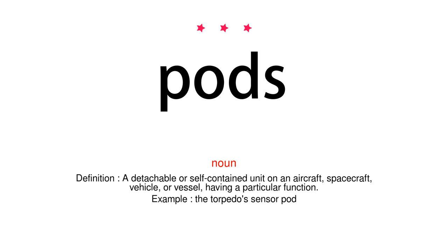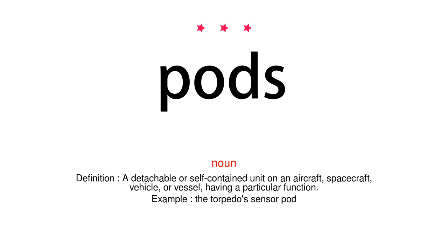Noun. Definition: A detachable or self-contained unit on an aircraft, spacecraft, vehicle, or vessel, having a particular function. Example: The torpedo's sensor pod.